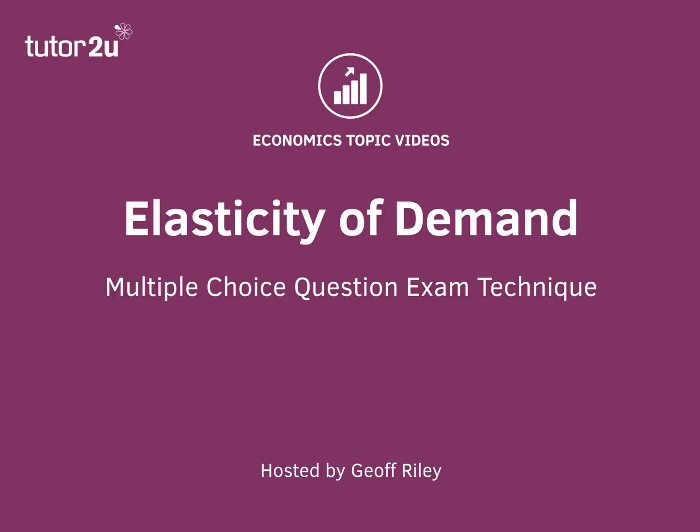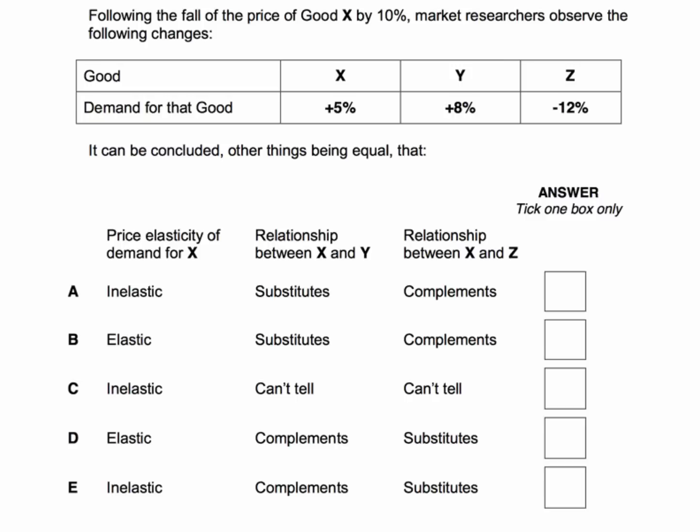Hi there. Here's a multiple choice question on elasticity of demand. Following a fall in the price of good X by 10%, market researchers observe the following changes. If the price of X falls by 10%, the demand for X goes up by 5%, the demand for a related good Y also rises by 8%, and the demand for good Z falls by 12%.